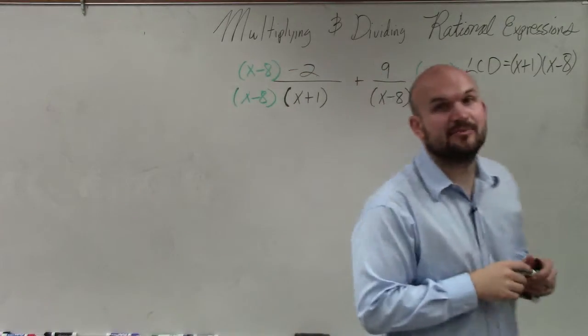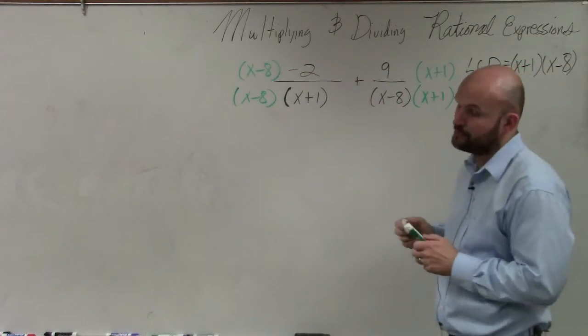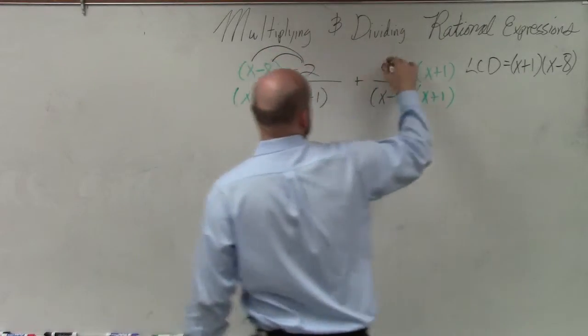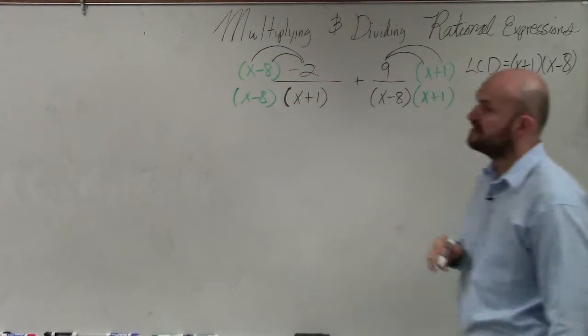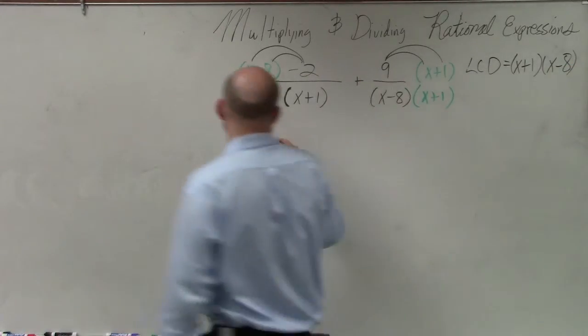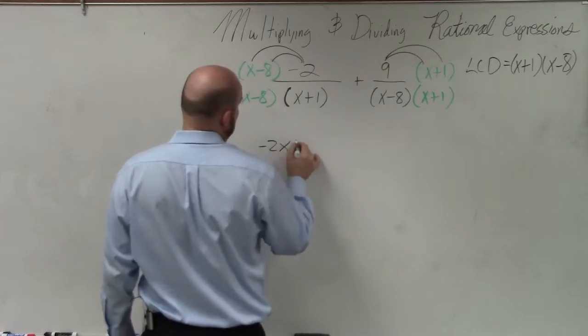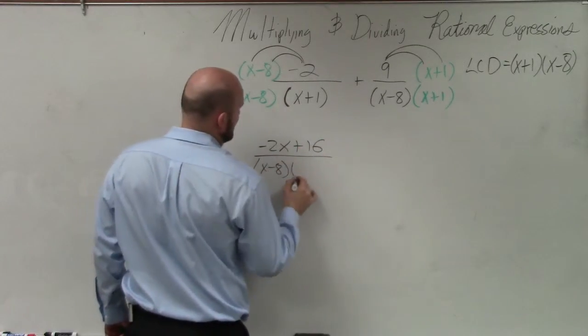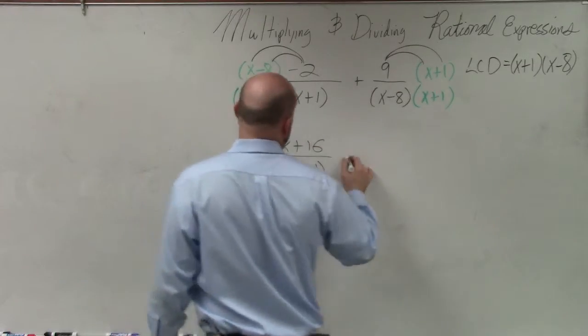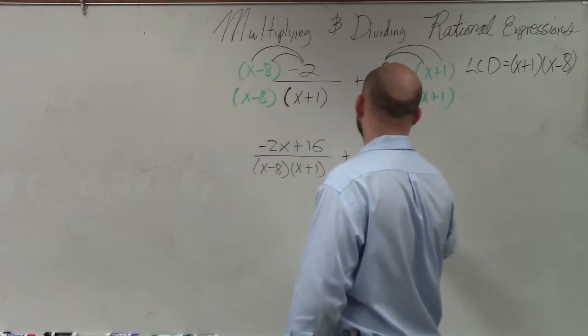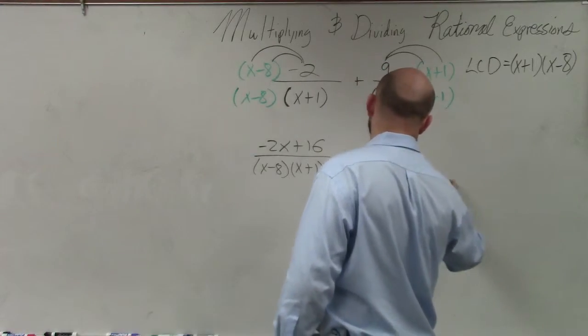So now, you guys can see that I need to simplify my numerators. To simplify my numerators, I need to apply distributive property. Now, you could multiply this out, but I'm just going to leave this as a product down below. So what I have here is negative 2x plus positive 16 all over x minus 8 times x plus 1 plus 9x plus 9 all over x minus 8 times x plus 1.